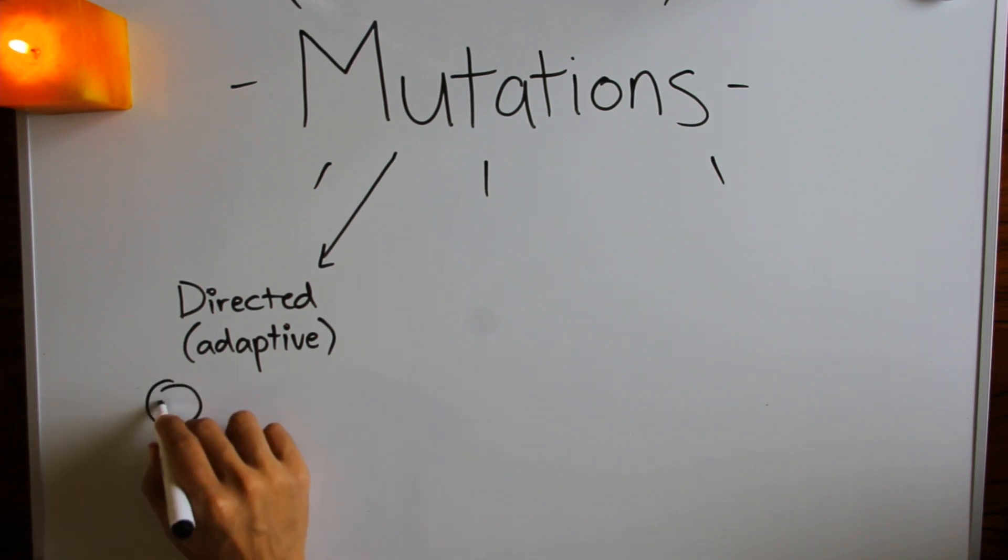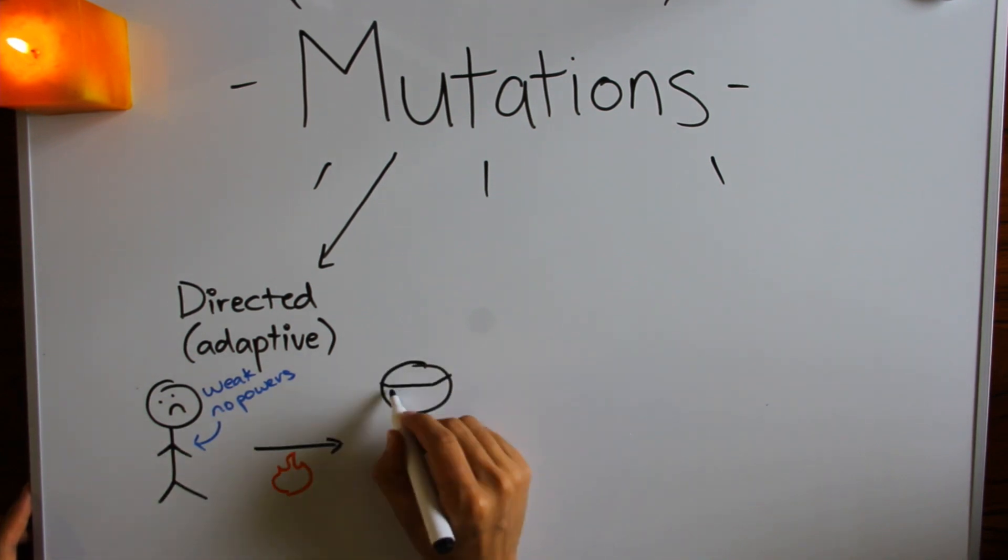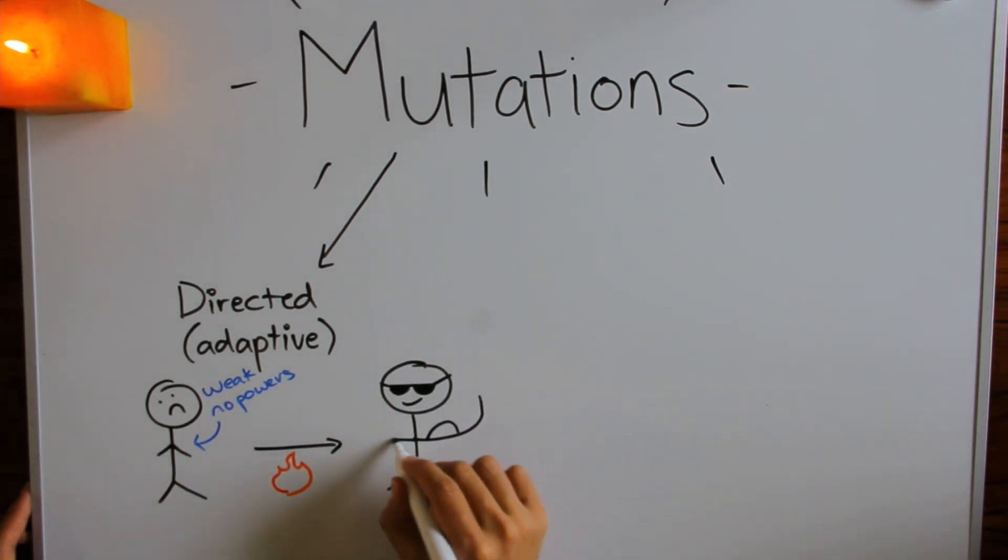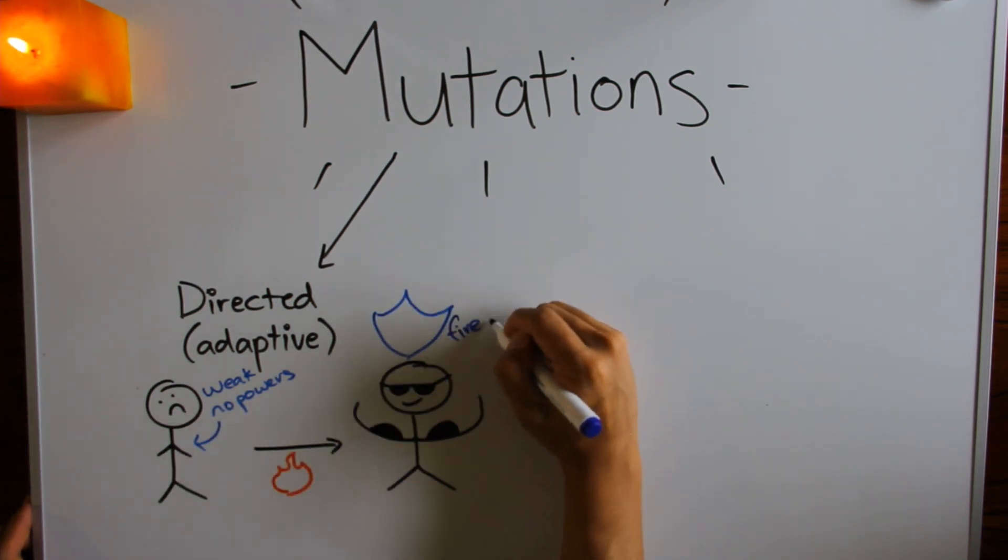There were two big ideas: directed mutation and pre-adaptation. Directed mutation was the idea that organisms mutate in response to environmental change. If you set me on fire, I'll mutate to become fireproof.